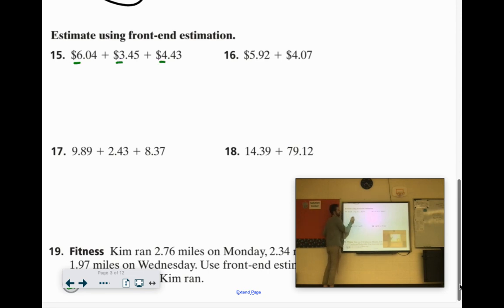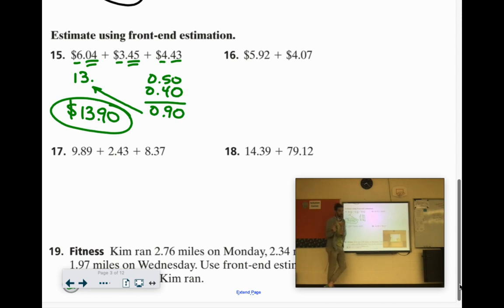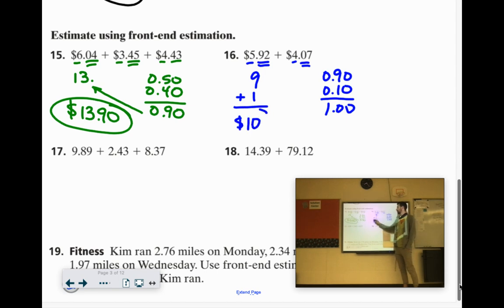6 plus 3 is 9 plus 4 is 13. We're going to add 4 cents and we'll just call that 0 cents. 45 cents we'll call 50 cents. 43 cents we'll call 40 cents. 50 cents and 40 cents would be 90 cents. If you add that to the 13, 13.90. If you are similar to 13.90 you're in great shape. 5.92, 4.07. So 5 plus 4 is 9, $9. 92 cents, call it 90 cents. 7 cents we'll call 10 cents. 90 cents plus 10 cents is another dollar. We have 9 plus 1, $10.